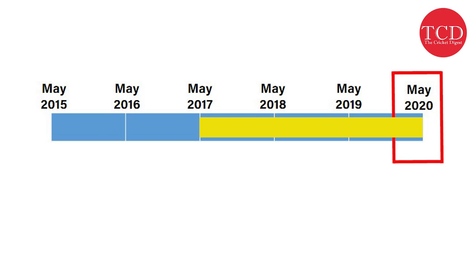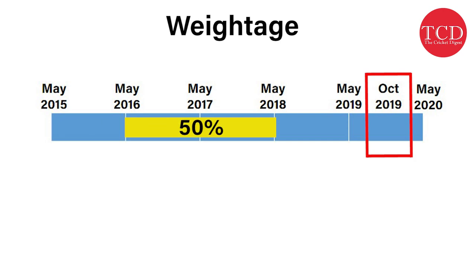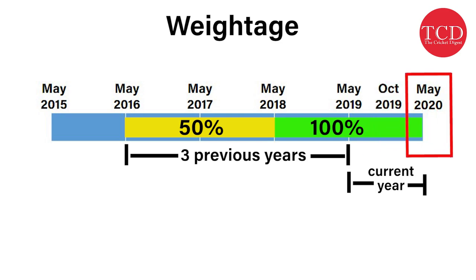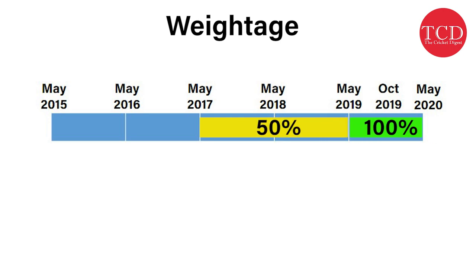All the matches in the mentioned period will not be given the same weightage. For example, in October 2019, matches from May 2016 to May 2018 will be given 50% weightage, and from May 2018 to October 2019, all matches will get 100% weightage. This calculation remains valid till May 2020. In May 2020, matches from May 2016 to May 2017 will be dropped, and matches from May 2017 to May 2019 will be switched to 50% weightage. This calculation will be valid till May 2021, and so on.